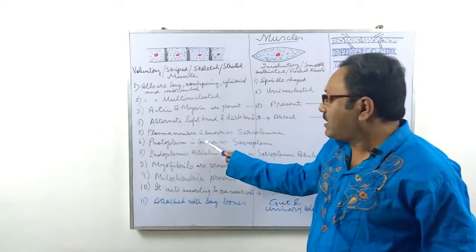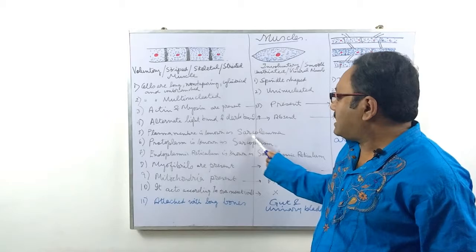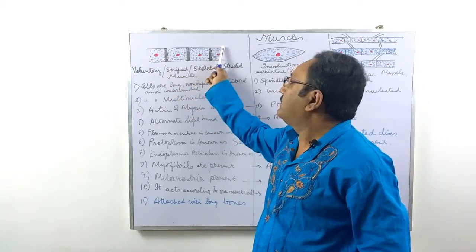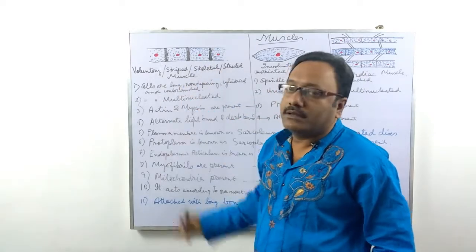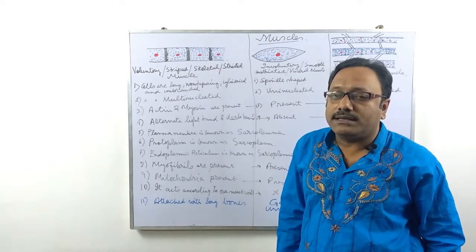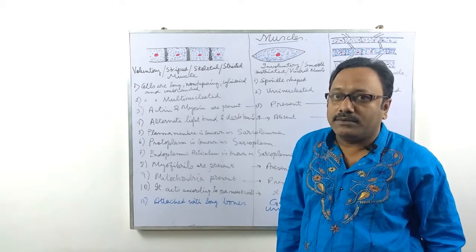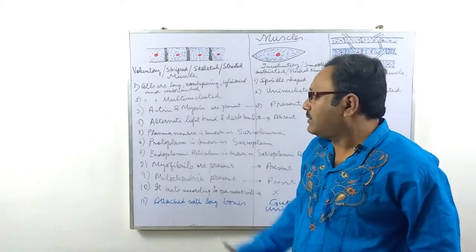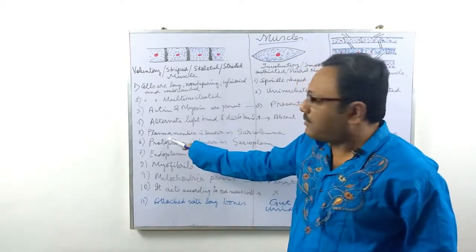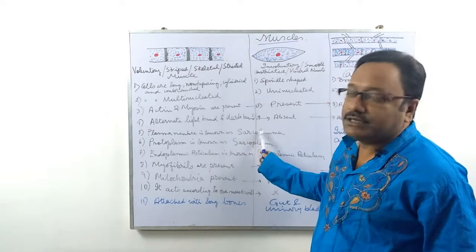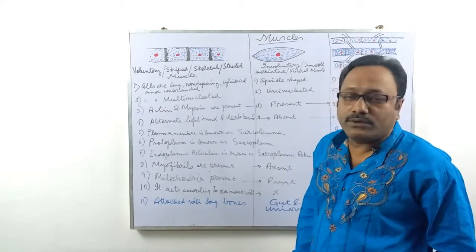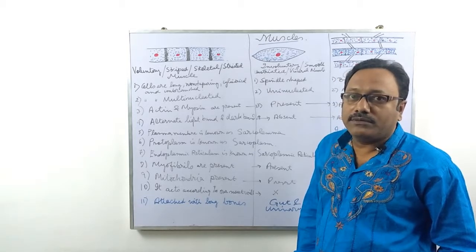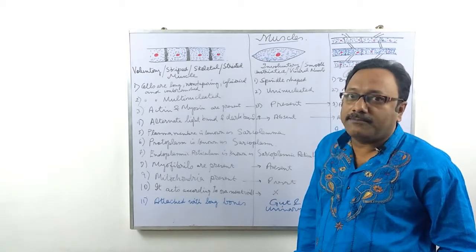Point number five: the plasma membrane is known as sarcolemma. This plasma membrane is also called sarcolemma. Sarco means muscle and lemma means plasma membrane. So another name of the plasma membrane of muscle is sarcolemma — it is nothing but the plasma membrane present in the muscle cells.